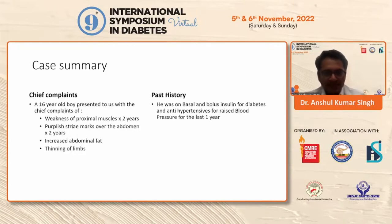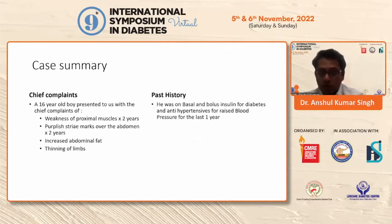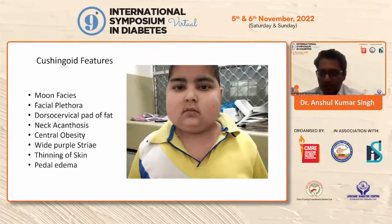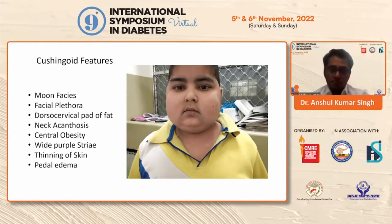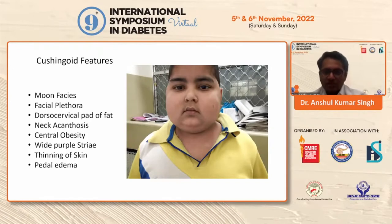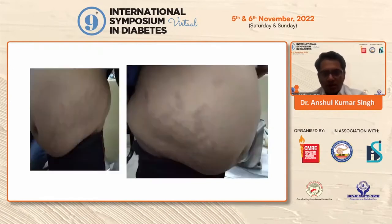Moving on to case 2. This was a 16-year-old boy with weakness of proximal muscles, purplish striae, and increased abdominal fat. He was also diagnosed with diabetes and hypertension. He was being controlled with insulin and was on antihypertensives. This is the classical presentation: the patient had moon facies, facial plethora, dorsal cervical fat pad, acanthosis nigricans. The classical Cushingoid features were present, including the purplish striae.